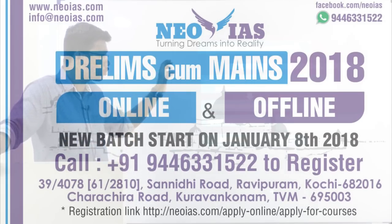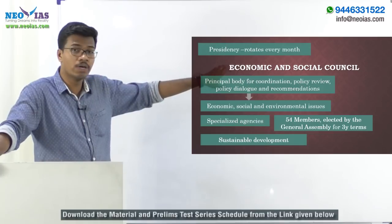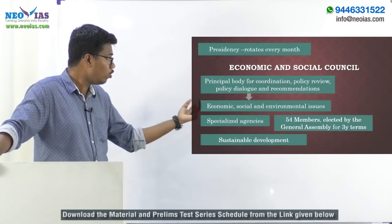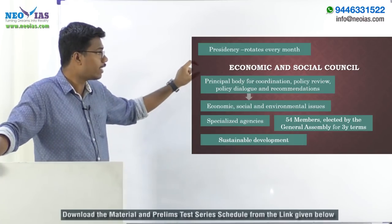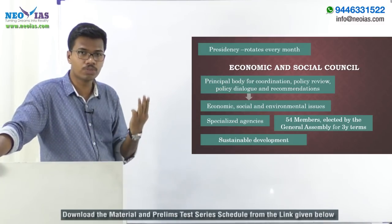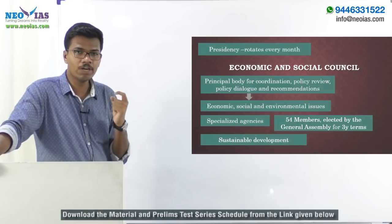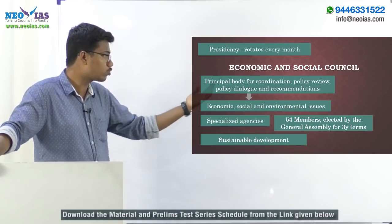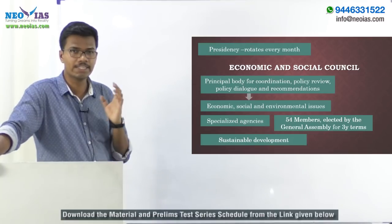The United Nations Economic and Social Council, or ECOSOC, is the principal body of the United Nations for coordination, policy review, policy dialogue, and recommendations on three major issues: economic, social, and environmental issues. Whenever UN specialized agencies deal with these three topics, they are coordinated by the Economic and Social Council. That is the core role of ECOSOC.